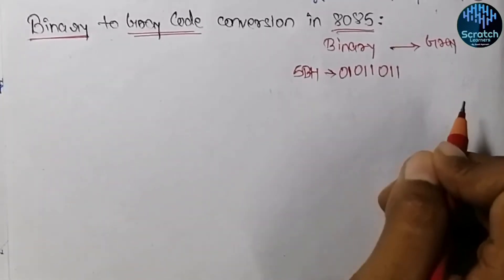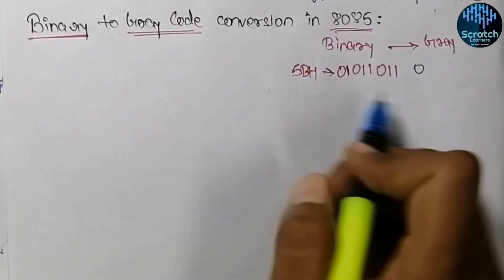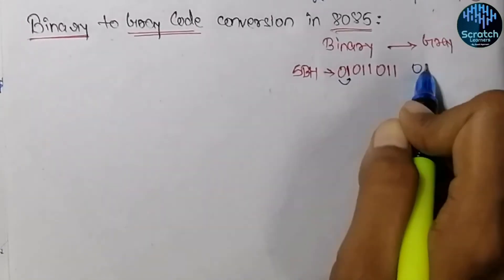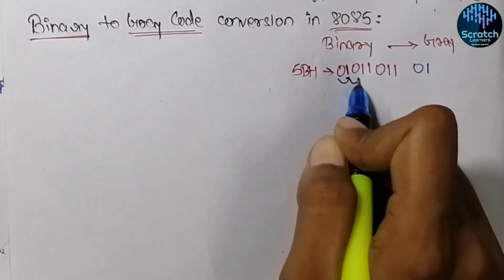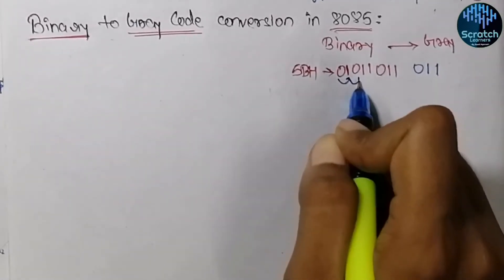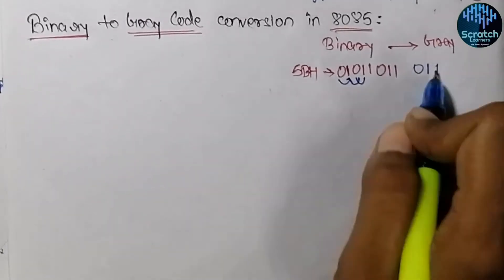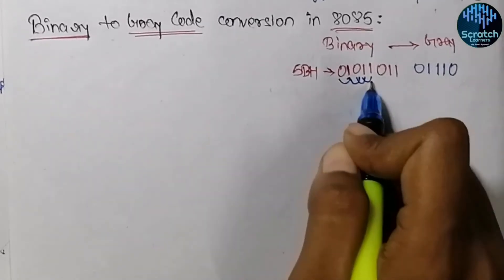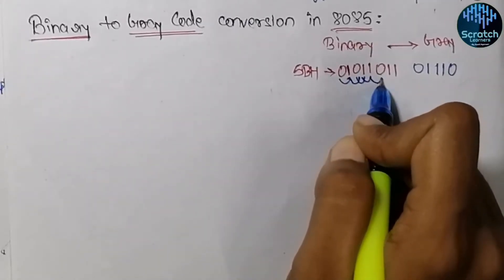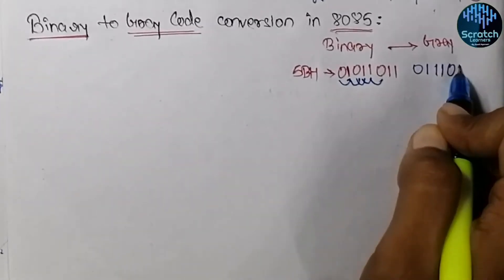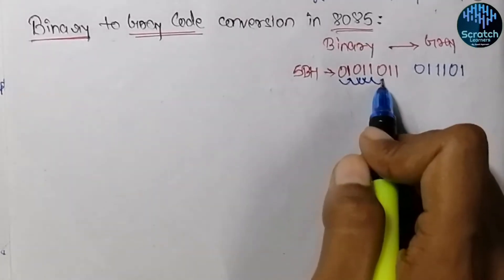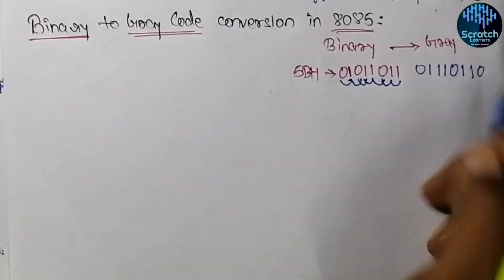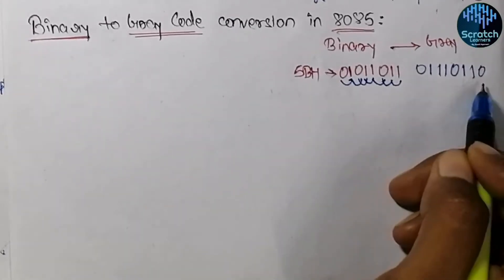So how we actually do this: we write a 0 first, then 0 XOR 0 equals 0, then 0 XOR 1 equals 1, then again 1 XOR 0 equals 1, then 0 XOR 1 equals 1, then 1 XOR 0 equals 1, then 1 XOR 0 equals 1, and 1 XOR 1 equals 0. So this is the equivalent grey code.